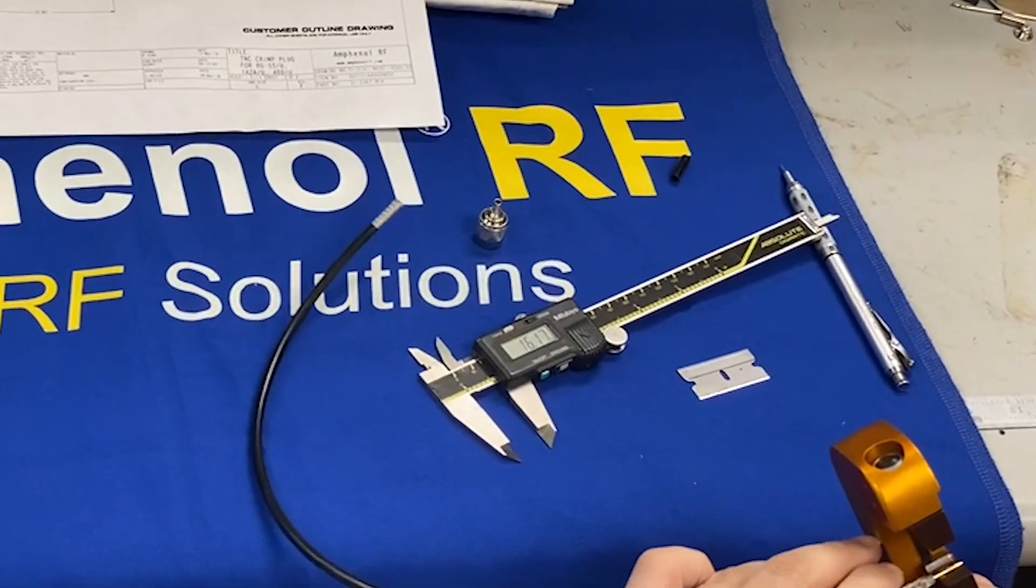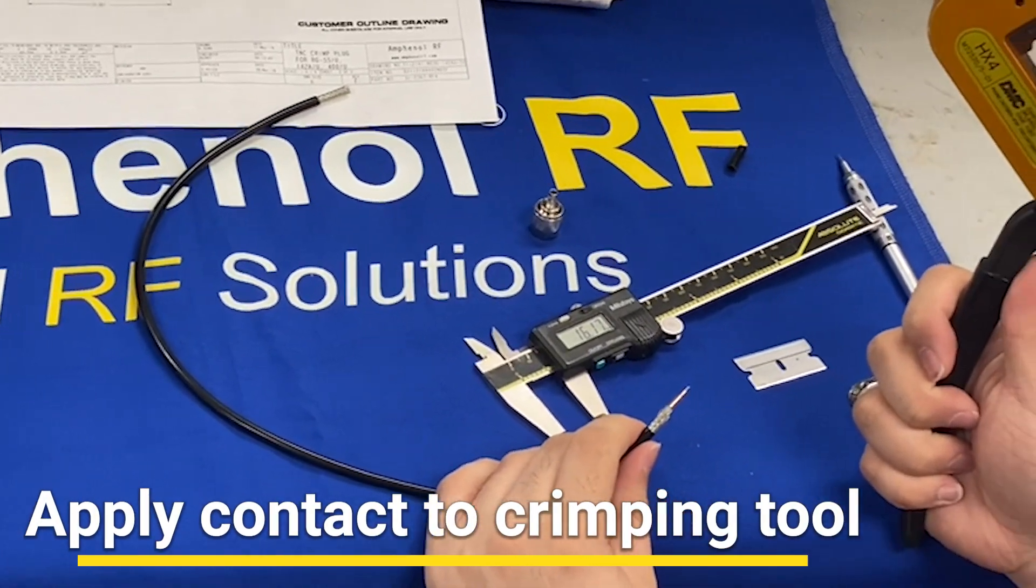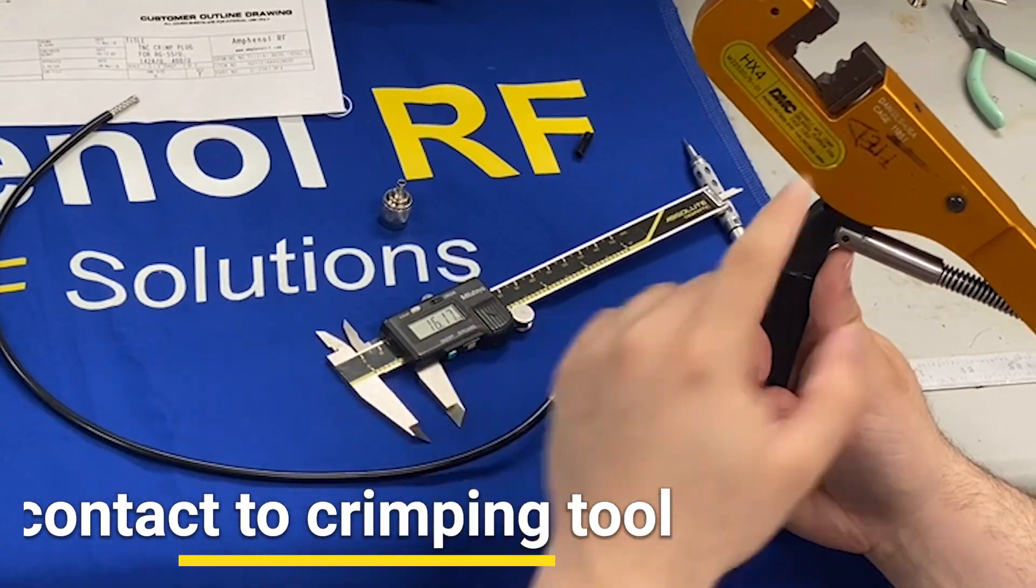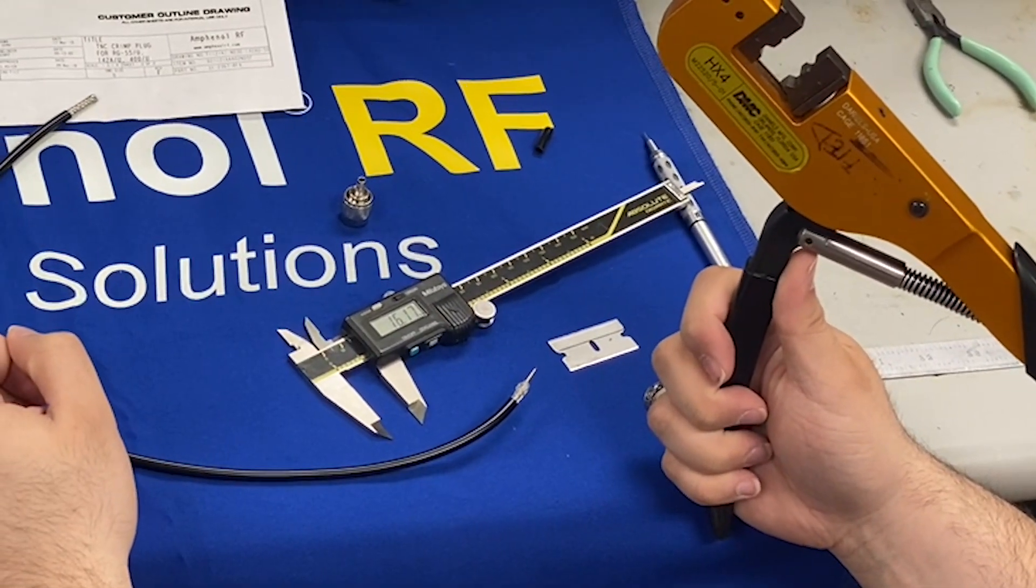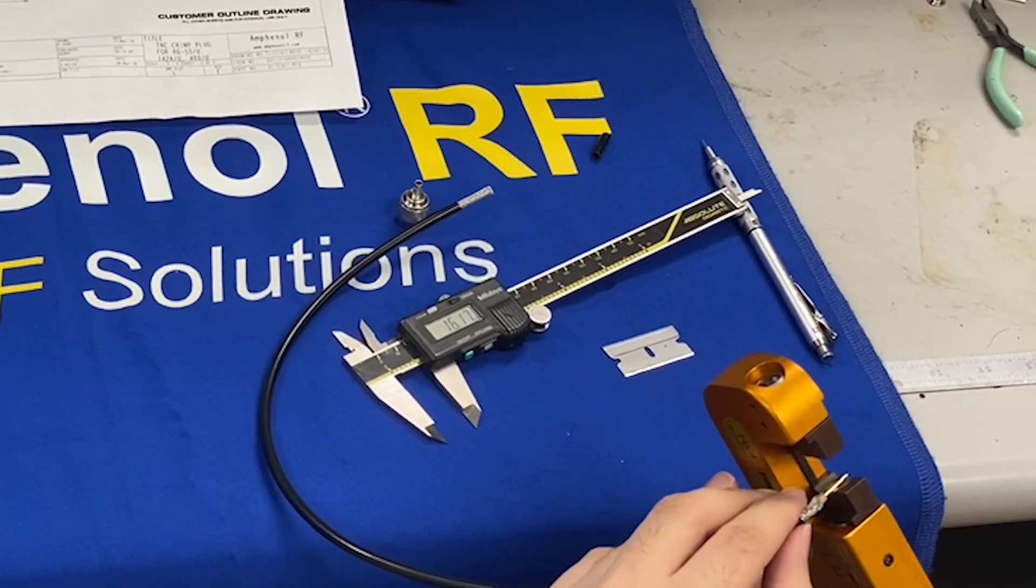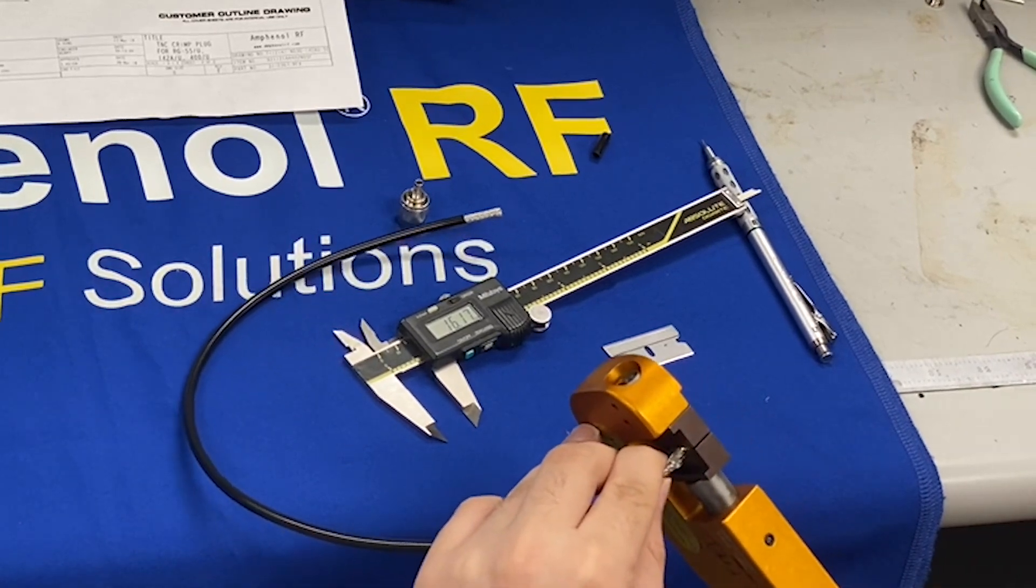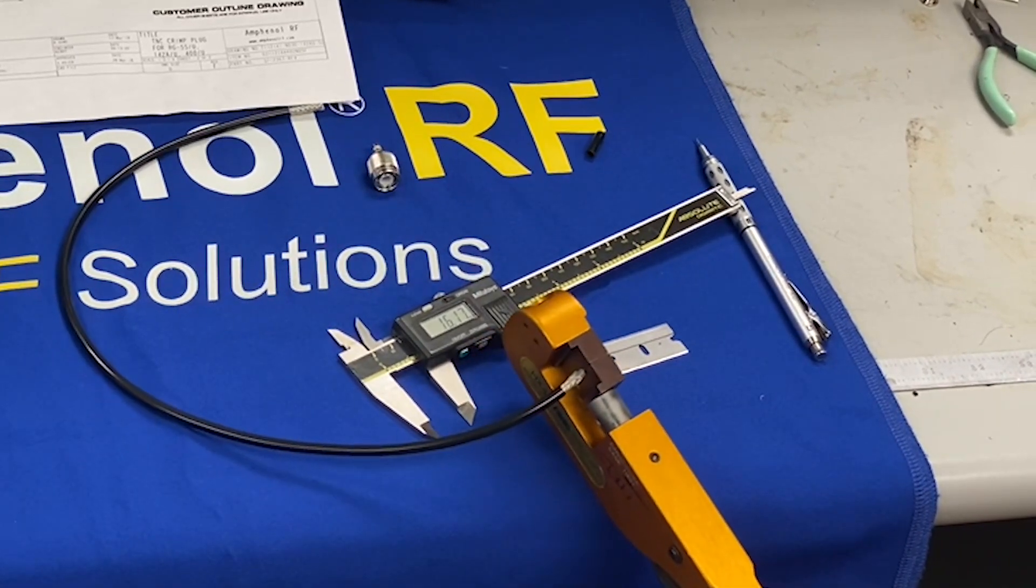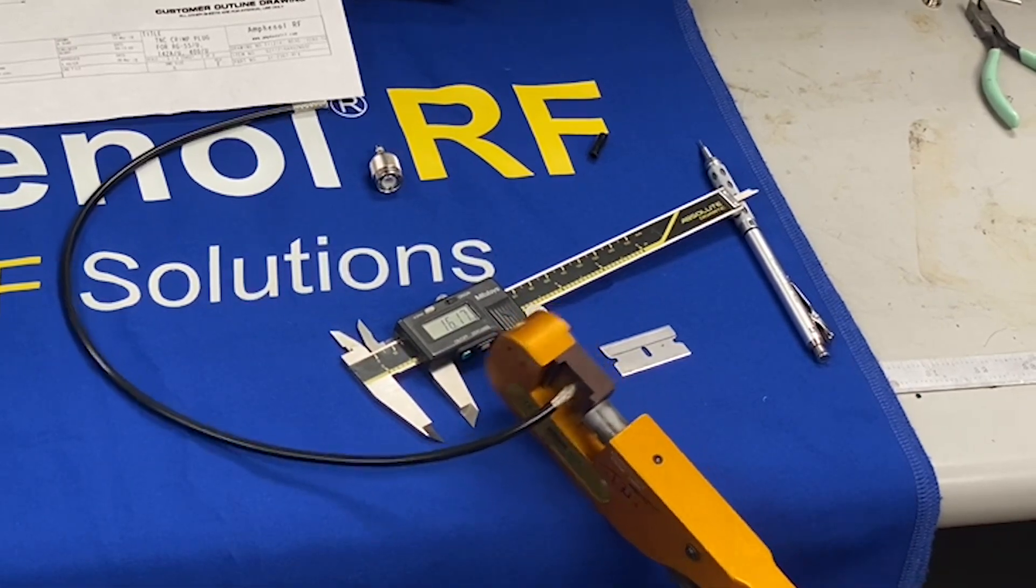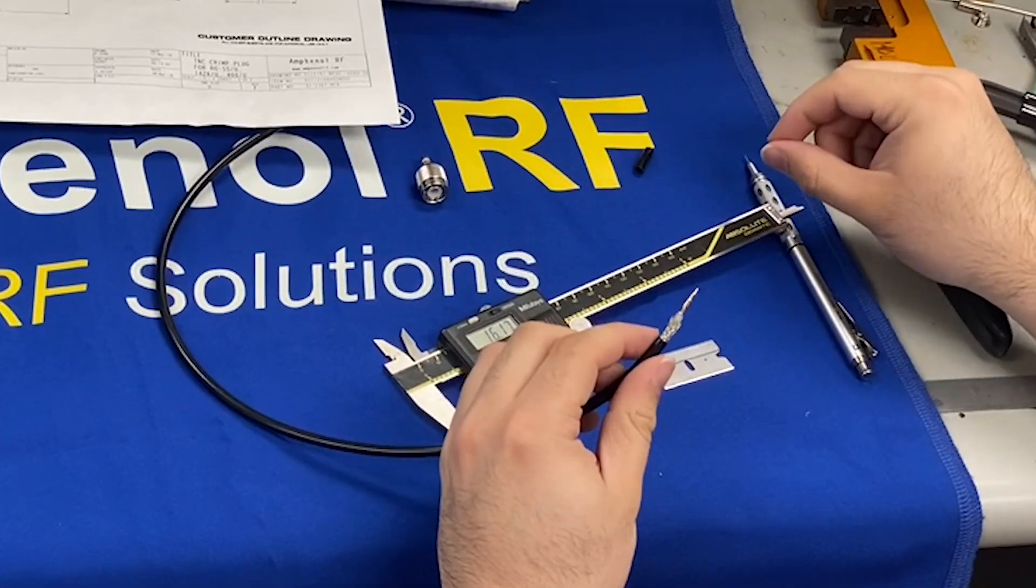So now we apply the contact into our crimping tool. This particular die set already has two hex sizes unique to this cable and connector. So we will rest the center contact on the tool and squeeze it. And the tool will automatically release. And the center contact is crimped.